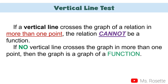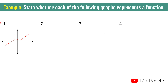What is the use of the vertical line test in identifying a relation as a function or not? We use this test if the given relation is presented using a graph. If a vertical line crosses the graph in more than one point, the relation cannot be a function. If no vertical line crosses the graph in more than one point, then the graph is a function. In example number 1, you may draw a vertical line anywhere on the graph — as you can see, it only intersects at one point. Therefore, this graph is a function.